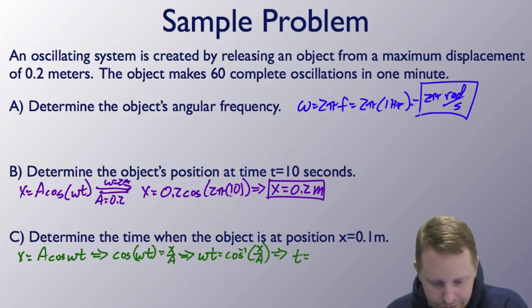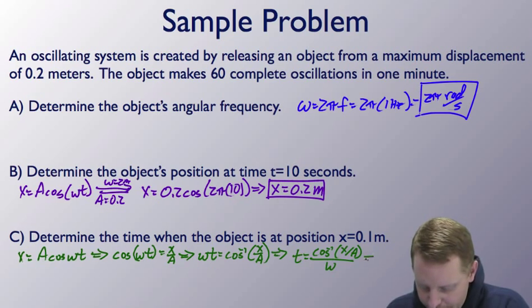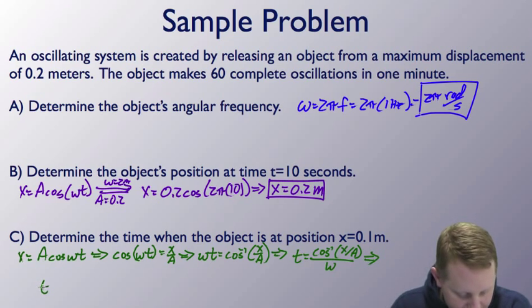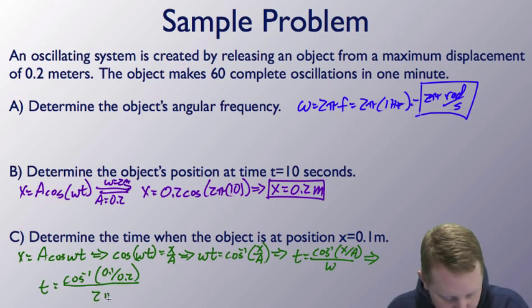Therefore, time equals the inverse cosine of x over a, all divided by omega. And then we substitute in our values, t is going to be equal to the inverse cosine of 0.1 meter divided by 0.2 meter, all divided by our angular frequency 2π, which gives us a time of 0.167 seconds.